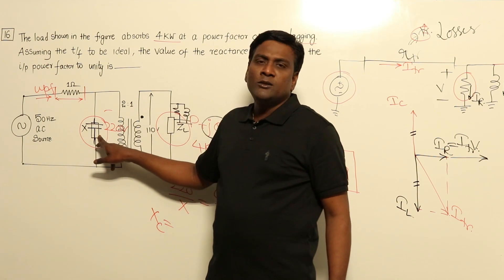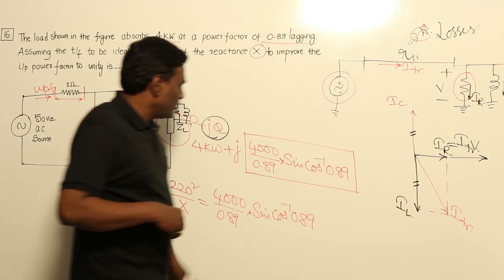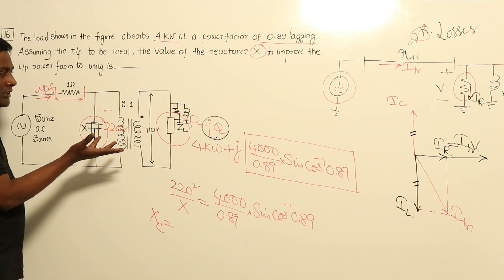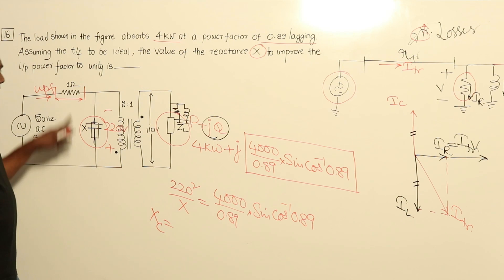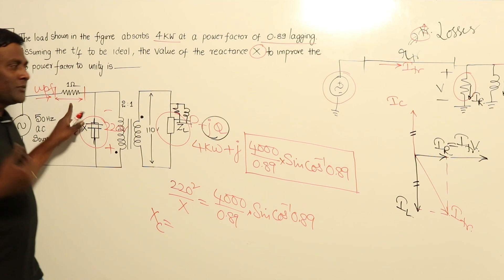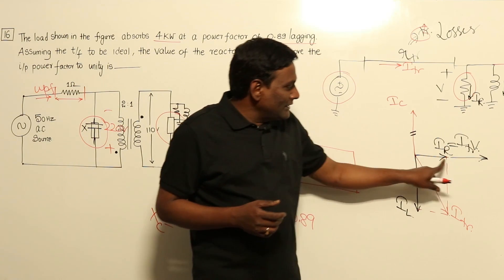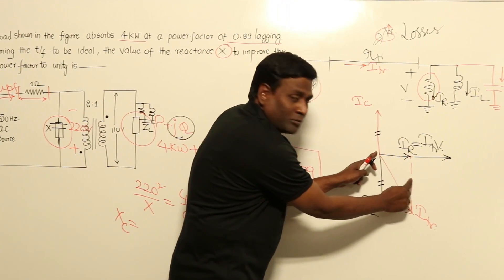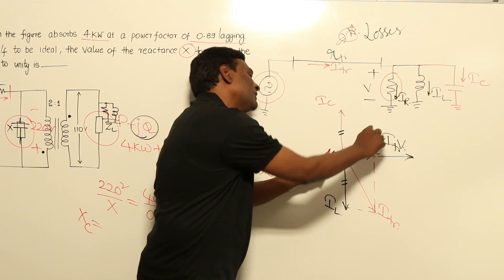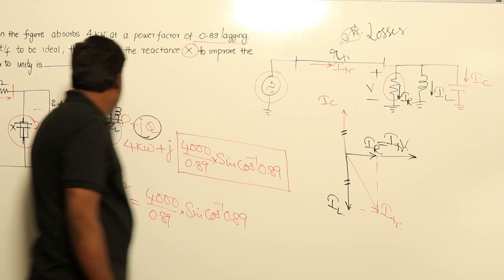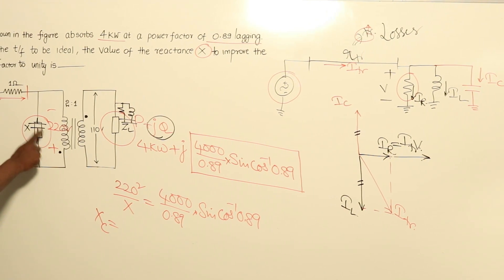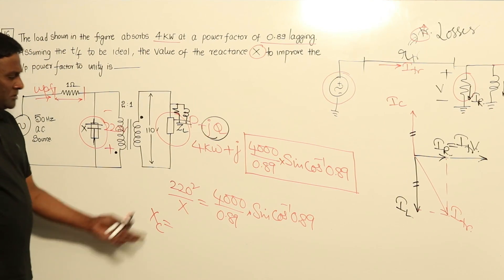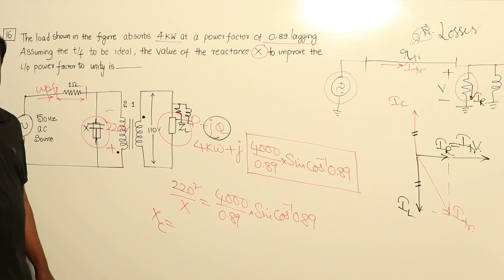So to summarize: if this capacitance can supply reactive power exactly equal to the requirement of the load, it will operate at unity power factor — meaning the least magnitude of current for the same active power. If lagging, current magnitude is more; if leading, current magnitude is more — unity is the minimum. So V²/X should equal the reactive power requirement of the load. Just calculate this — done.